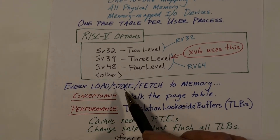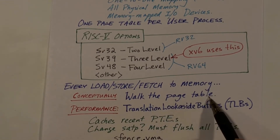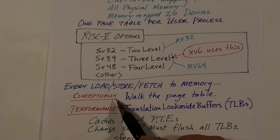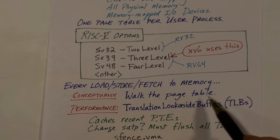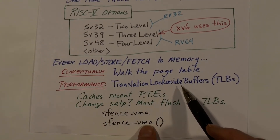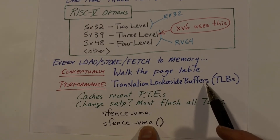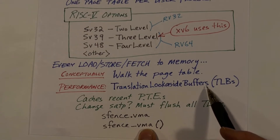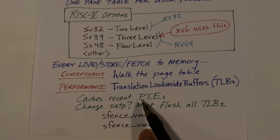Every load, store, or fetch to or from main memory will walk the page table — at least conceptually — to find the address translation to use. Walking the page table involves several memory accesses, which would lead to incredible inefficiency. So for performance reasons, a real processor has translation look-aside buffers: registers in the core that are essentially invisible to programmers, and which act as caches for recent page table entries.